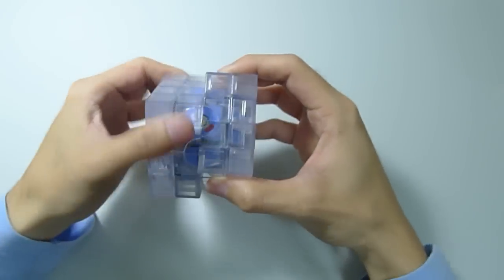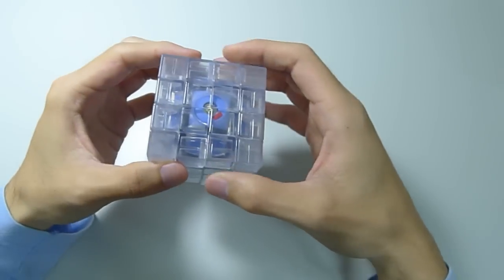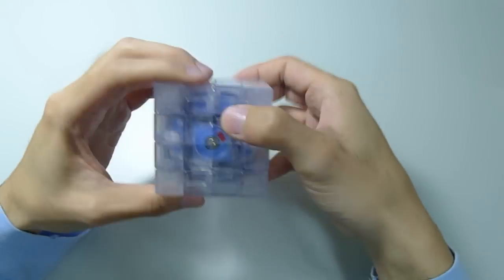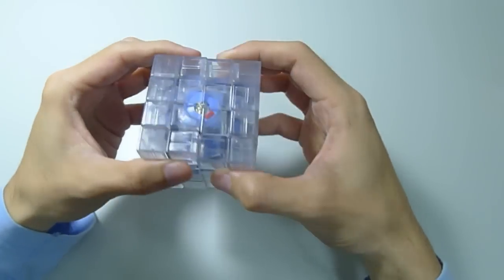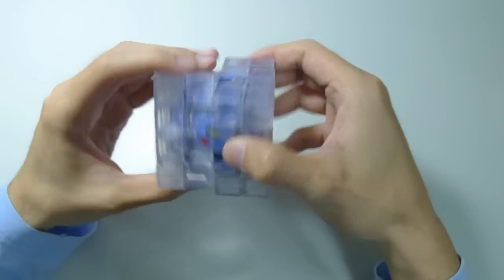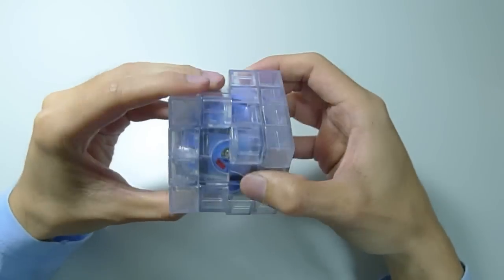And when I split the middle layer, it goes with the side which have red stickers. Like this, it goes with right. And in this case, it goes with left.